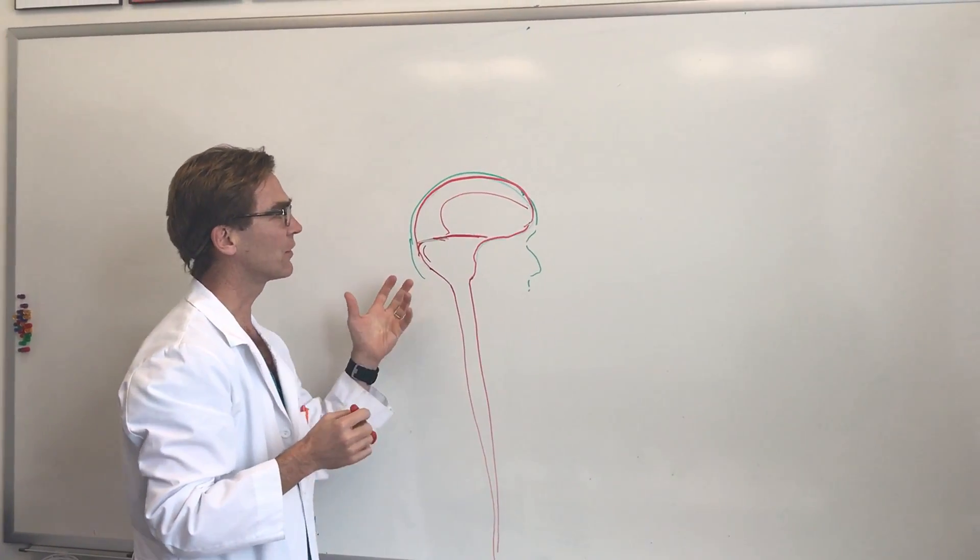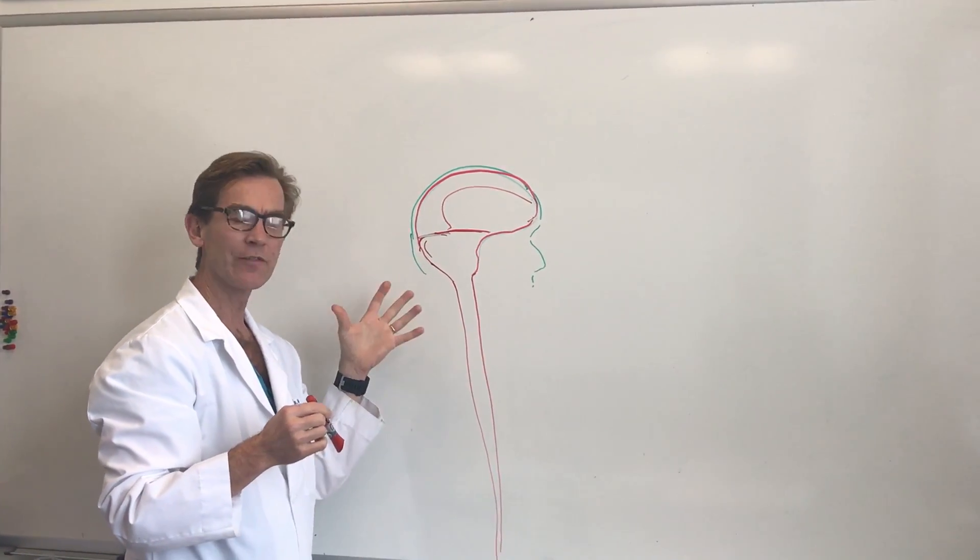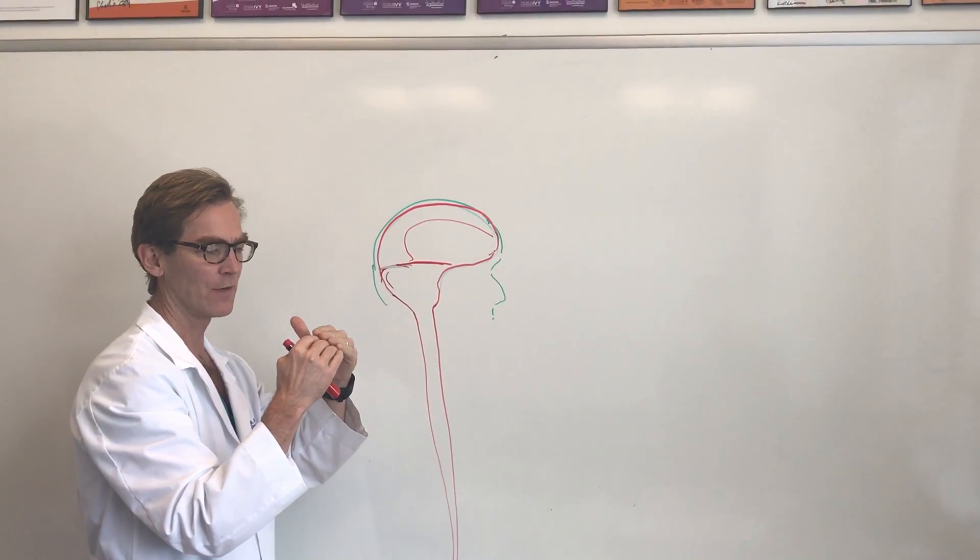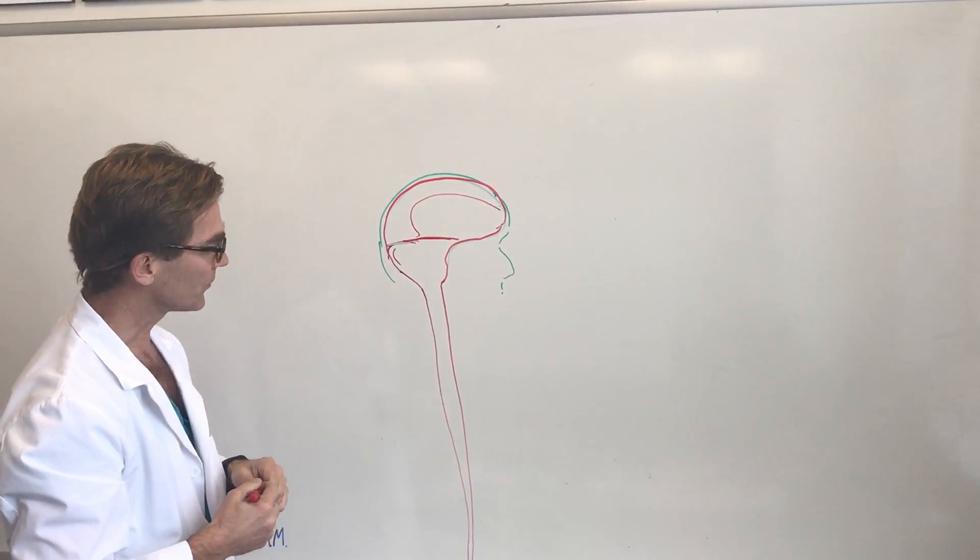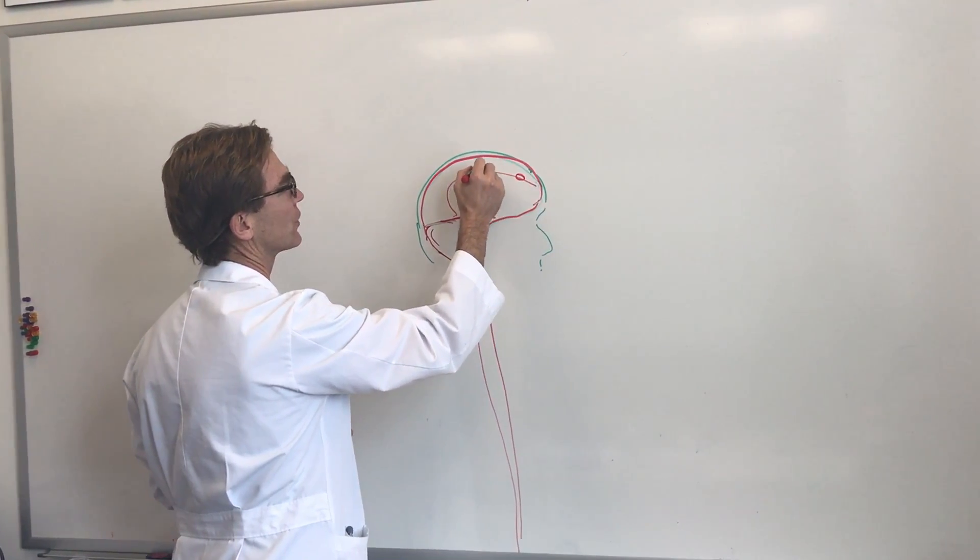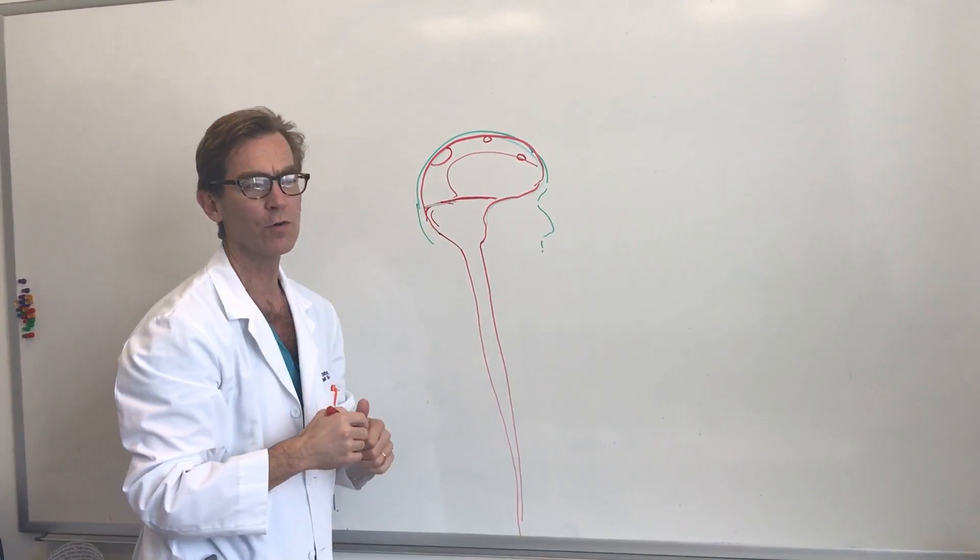Meningiomas are actually thought to derive from cells not exactly from the dura but from the arachnoid, which is another membrane sort of stuck to the dura.